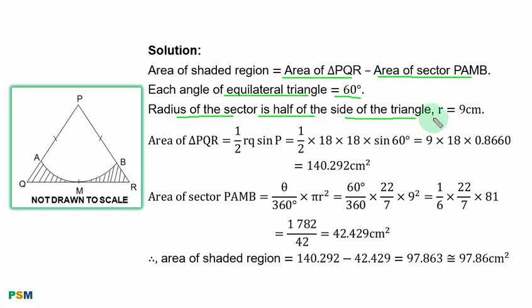Area of triangle PQR can be obtained using this formula: 1 over 2 times side, 18 cm, times side, 18 cm, times sin 60 degrees. When you simplify, you have this result and you have 140.292 square centimeters.